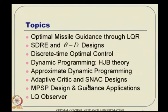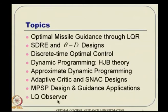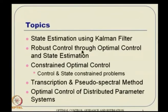Then we will venture into a different class of formulation called model predictive static programming design, which has huge potential for guidance applications. After that, we will move to the estimation part, as estimation and optimal control are complementary problems. We will see the linear quadratic observer, then proceed to state estimation using the Kalman filter. There is also an idea of robust control through combining optimal control and state estimation.